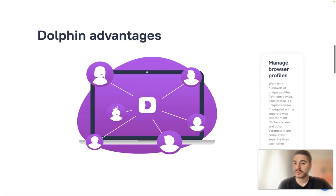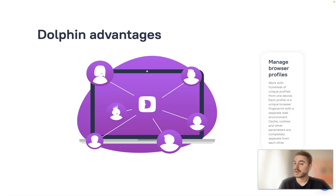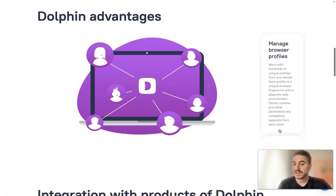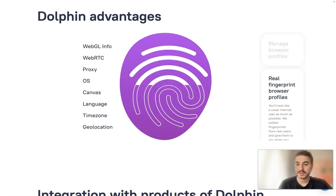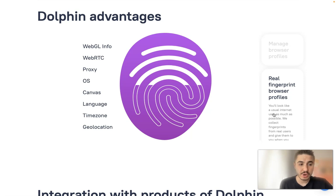Manage browser app profiles — work with hundreds of unique profiles from one device. Each profile is a unique browser fingerprint with a separate web environment. Cache, cookies, and other parameters are completely separate from each other. You can create separate browsing environments with their own digital fingerprints, different browser headers, and other identifying information. As a result, websites cannot link those environments to one another.